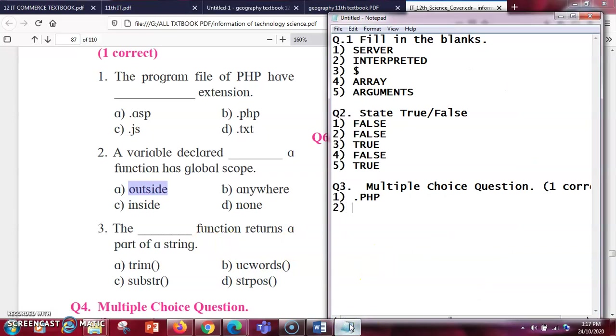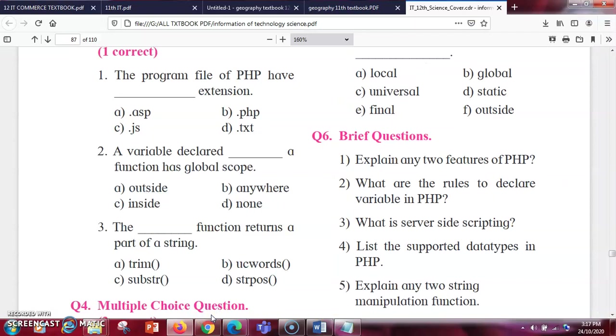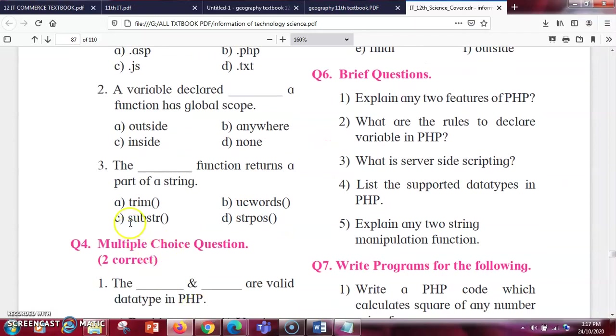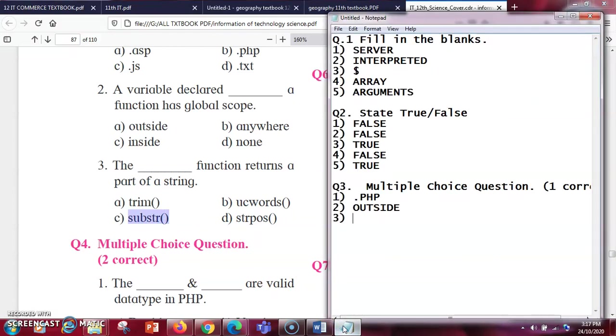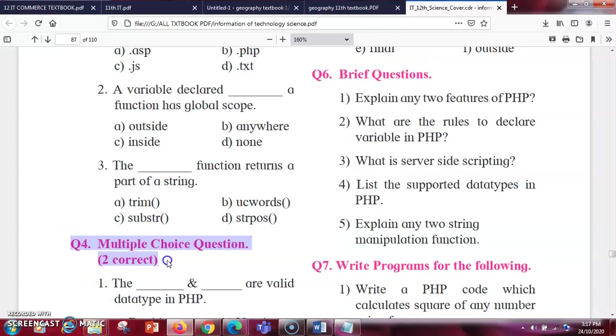Next question, the dash function returns a part of a string. So this is substring. Substring means a string which is already there and you want a small part of it. So the function is the substring function.